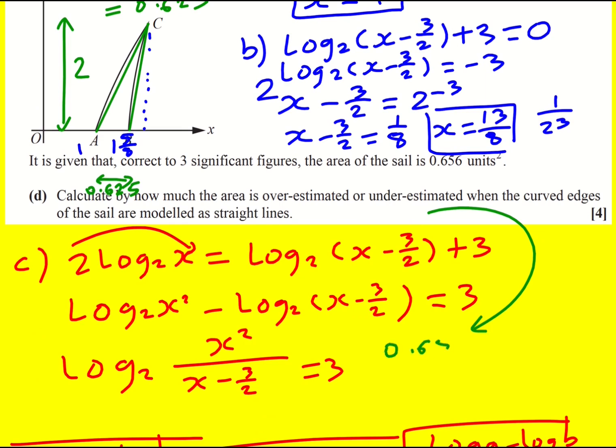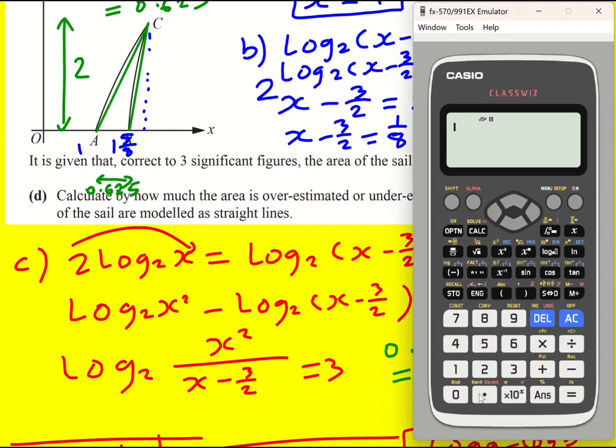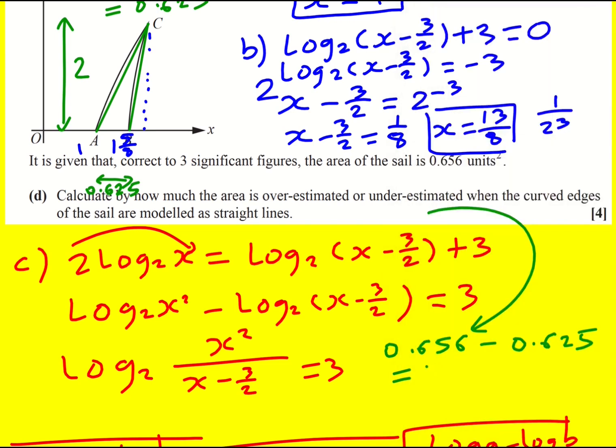The underestimate is going to be 0.656 minus 0.625, which equals 0.031. Good.